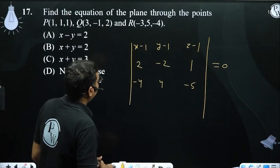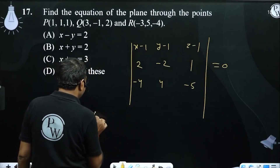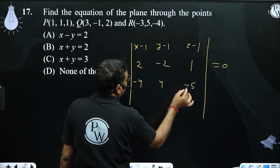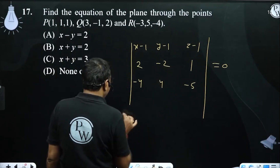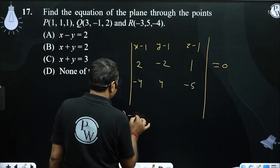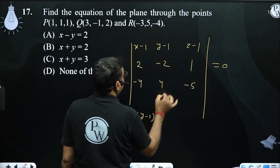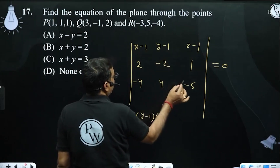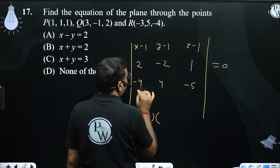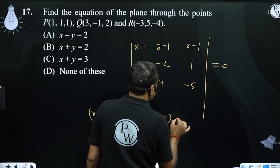x minus 1, x minus 1. Computing: 10 minus 4 equals 6; minus 10 plus 4 equals minus 6.